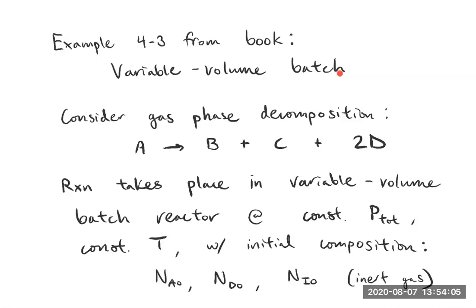A batch reactor is normally just a constant volume vessel — imagine a steel container. So it's not usually changing volume. But one scenario you might encounter every day is something like a piston. If a reaction is happening there and the container is expanding — as it would in a case where you have more moles formed on the right-hand side of the equation — that's a scenario we can use as a reference point.